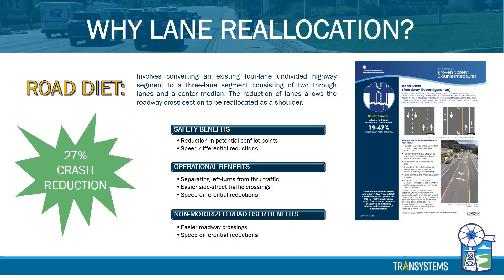So why a lane reallocation — also called a road diet? A road diet involves converting an existing four-lane undivided highway like Illinois Route 31 to a three-lane segment consisting of two through lanes and a center median, and that center median allows for the roadway cross-section to be reallocated as shoulders or other uses. The existing lanes are nine to nine-and-a-half feet through most of the corridor, which is substandard. We're proposing 11-foot lanes with a 10-foot bidirectional turn lane and two-to-three-foot shoulders, working within the existing footprint since IDOT did not want us to taper in or move any of the curb lines.